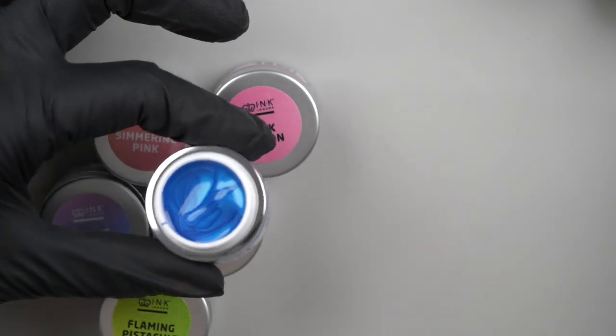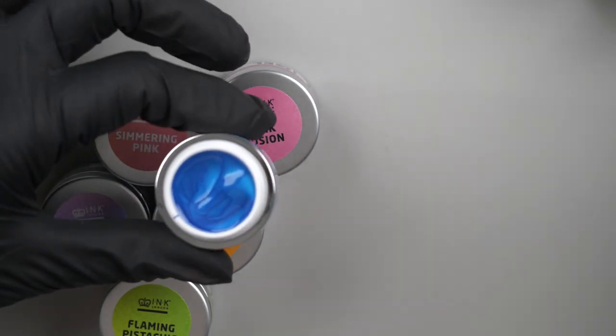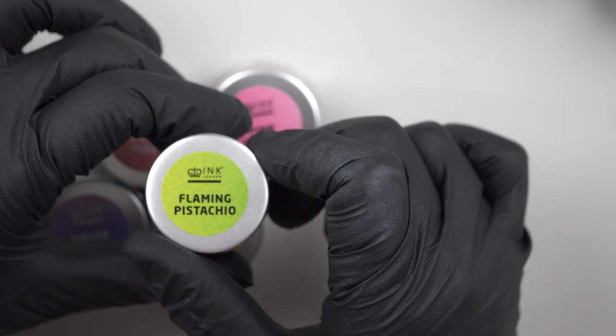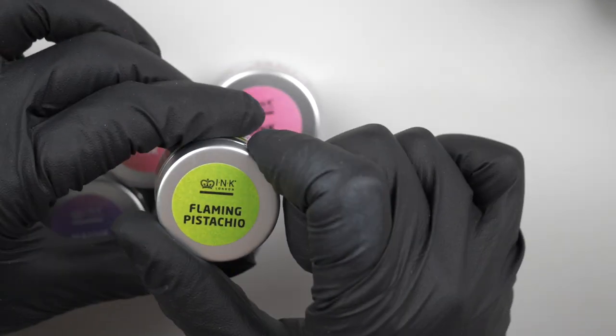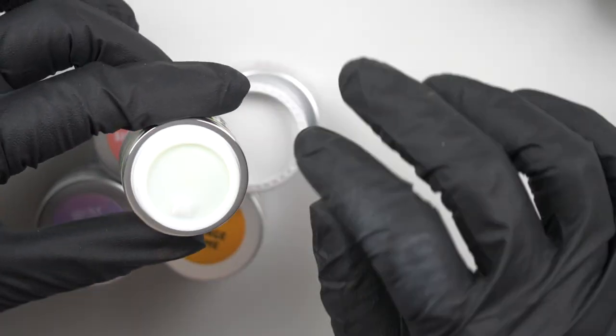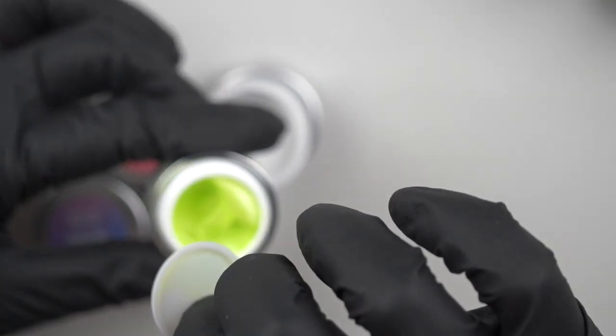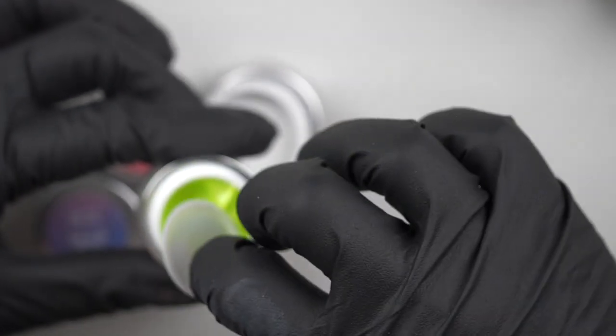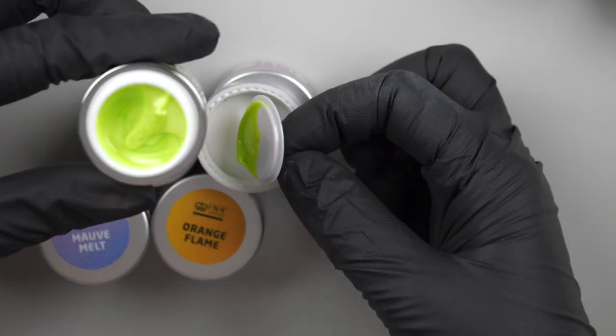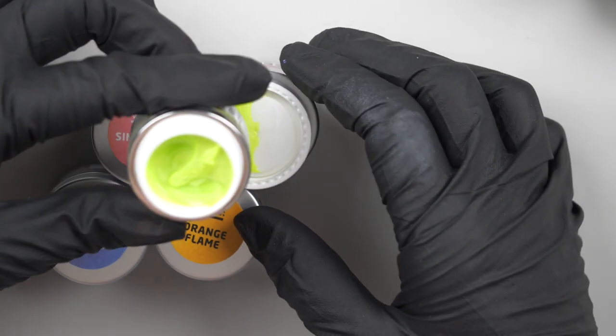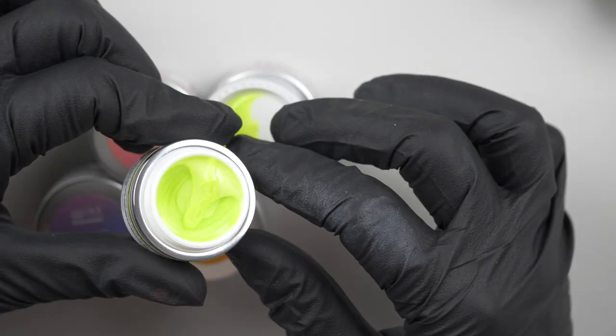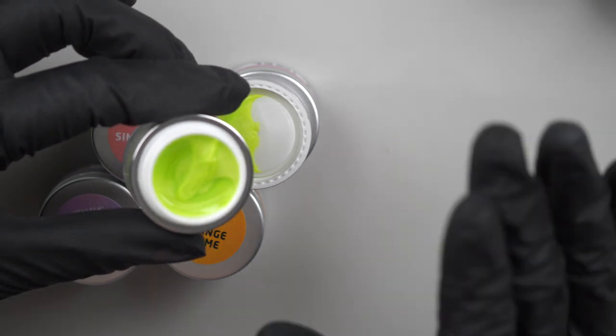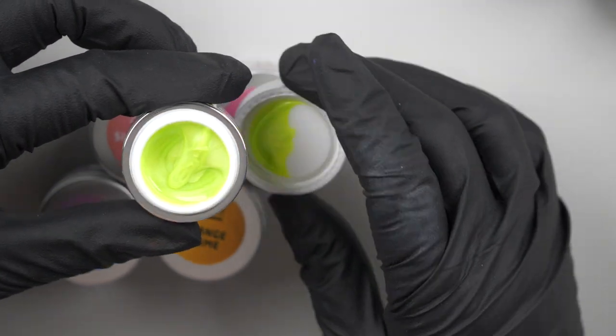Then we've got Flaming - I thought it was Flamingo, but it's not - it's Flaming Pistachio. Oh, that's bright! It's like an acid yellow, like a tennis ball bright yellow but with a little bit of a green tone to it. That's again really pearlized, so it's got a real nice shine to it.